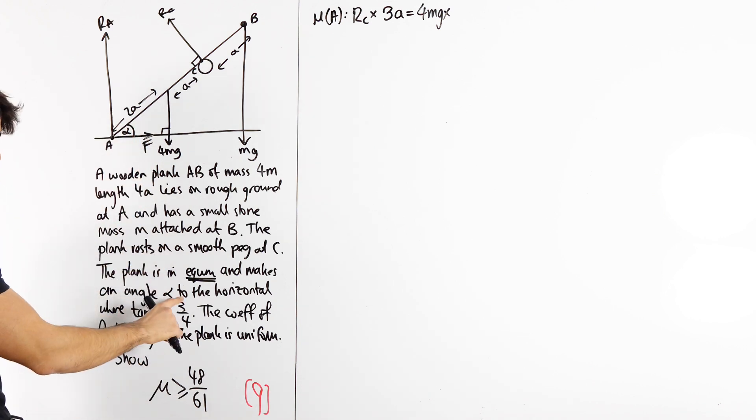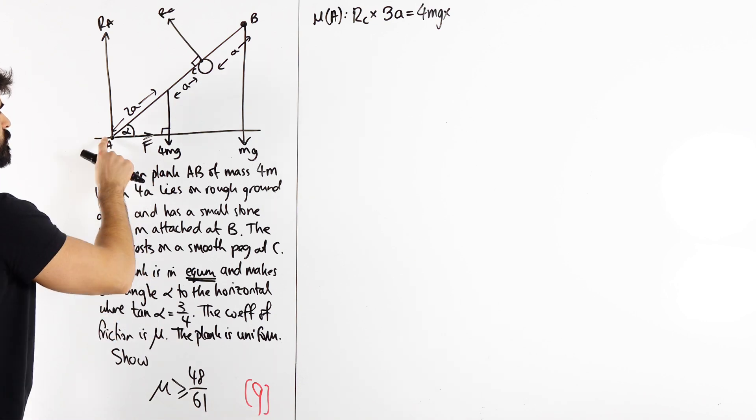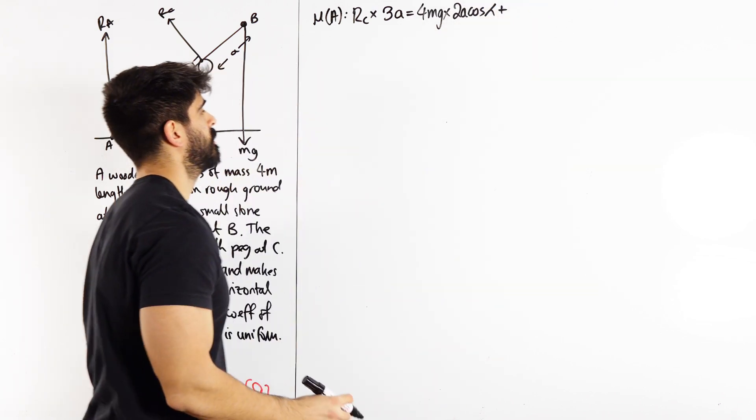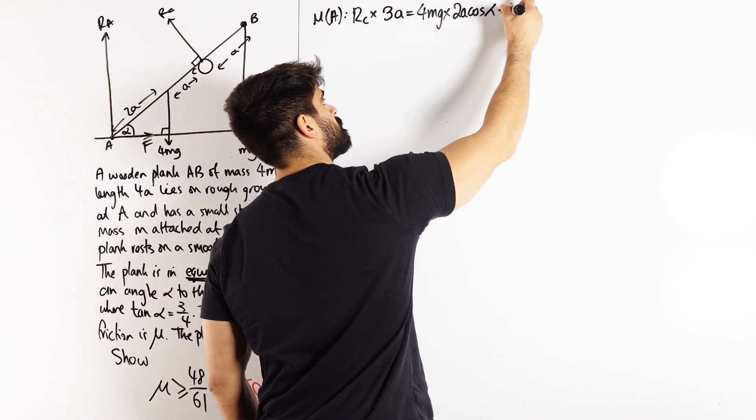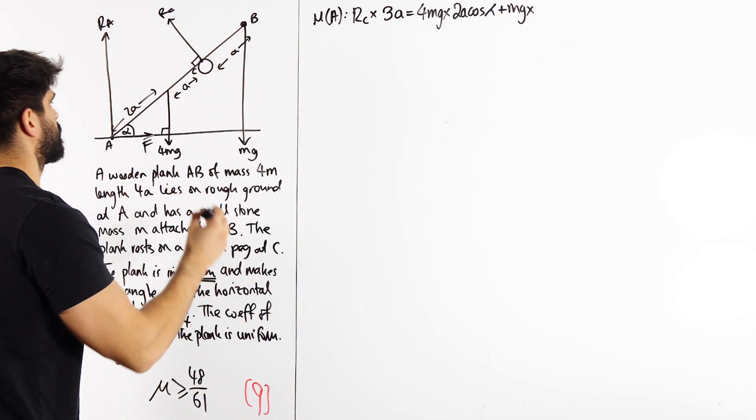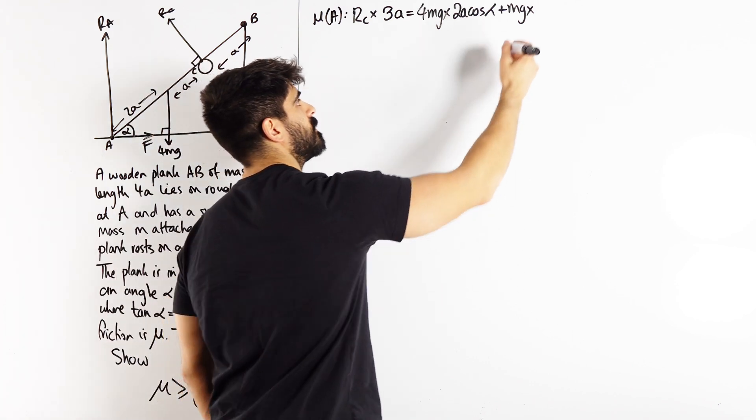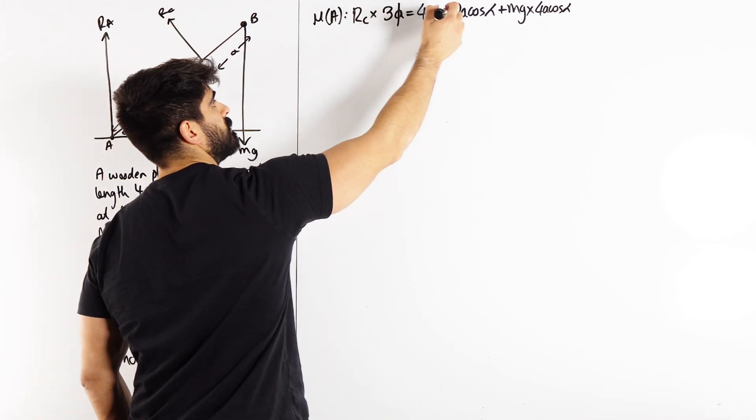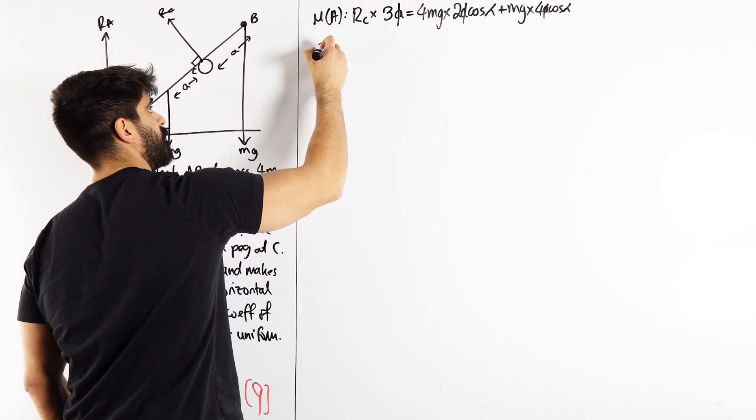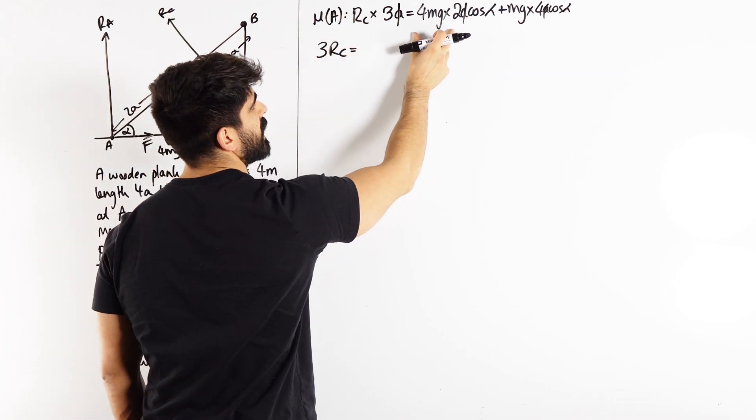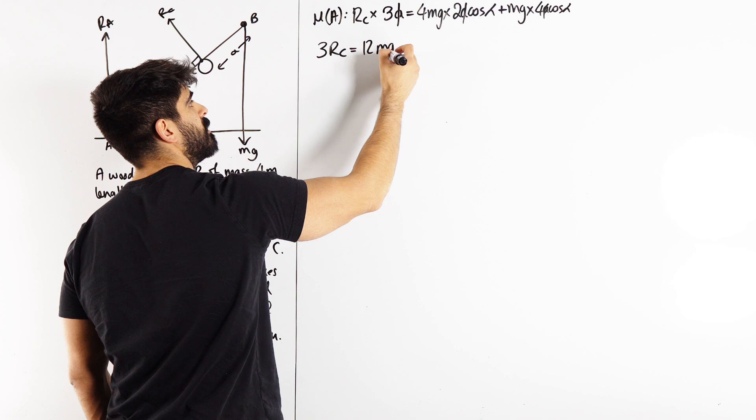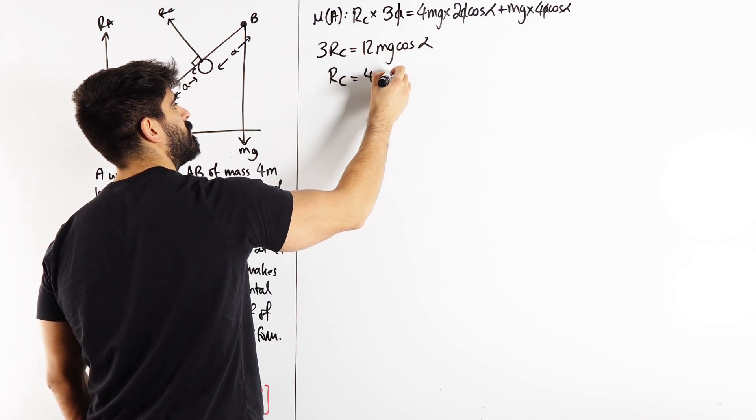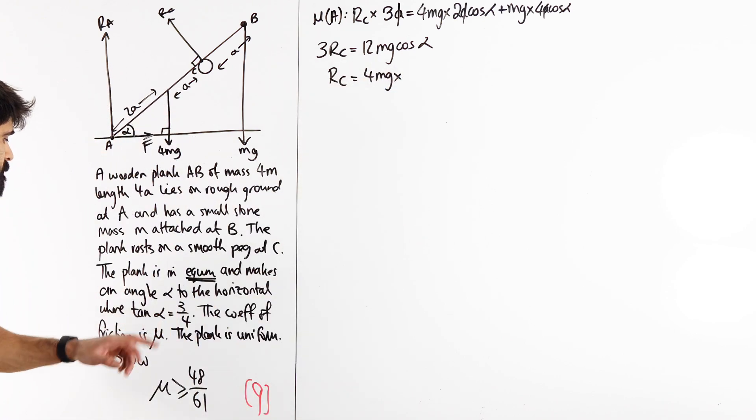Plus MG times a very similar distance, it's just the hypotenuse is 4A cos alpha. Right, the A's cancel. We have 3RC is 4 times 2, 8 plus 4, 12. MG cos alpha. Divide by 3, RC is 4MG times cos alpha.